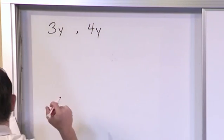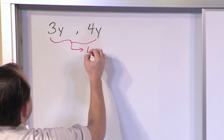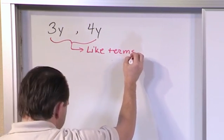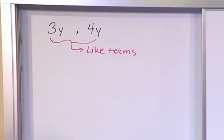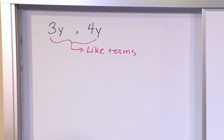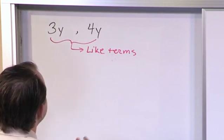These guys are basically what we call like terms. The reason that they're called like terms is because they both have y's here. So this is 3y's - 3 times y, 3 times the value of what y is. And this is 4 times y, 4 times the value of whatever y is.